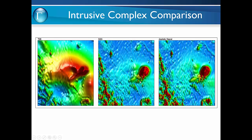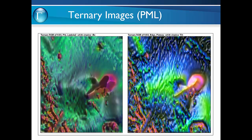Some of the things you can do with normalised source strength is look at combining the different parameters to see how they image in RGB ternary displays. The one on the left combines the normalised source strength, the co-inclination angle, and the second eigenvector amplitude using the shadow of the vertical component. A similar image uses an edge filter and plateau filter with the shadow of the tilt filter, combining the different components to see what stands out geologically — these features start to stand out quite well using the ternary display methodology.